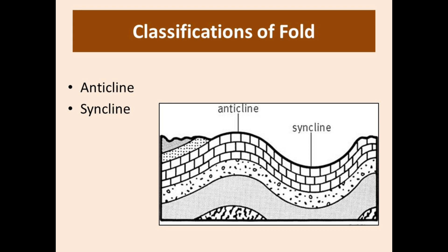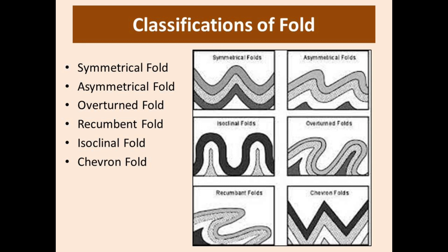The next type is symmetrical folds, in which two limbs dip at the same angle in opposite directions and the axial plane is vertical. The asymmetrical fold is the opposite — two limbs dip at unequal angles in opposite directions, and in this case the axial plane is inclined.